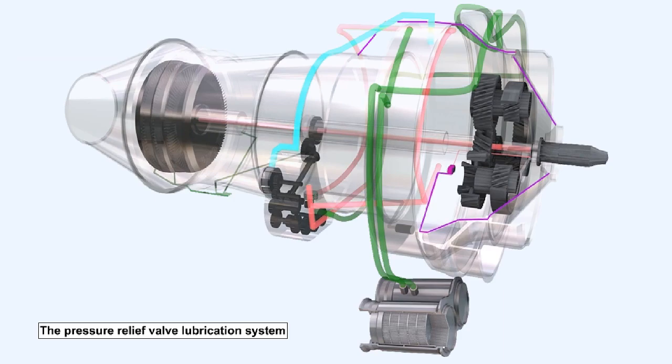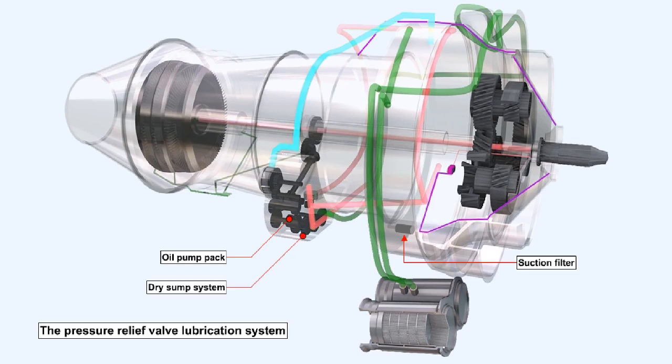This diagram shows the basic components required in the pressure relief valve lubrication system of a turboprop engine. The oil is drawn to the pressure pump through a suction filter. The suction filter protects the pressure pump from damage should any debris enter the tank. The oil pressure pump is contained within an oil pump pack. The oil pump pack contains one pressure pump and several scavenge pumps. Having several scavenge pumps ensures that the lubrication system remains a dry sump system.